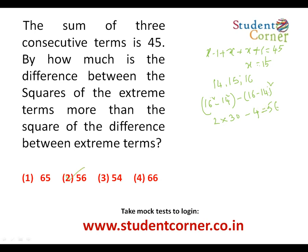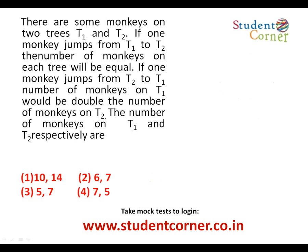This is one model of simple equations using only one variable. Now here is a tricky TCS-style question. There are two trees T1 and T2. If one monkey jumps from T1 to T2, T1 loses one monkey and T2 gains one monkey.